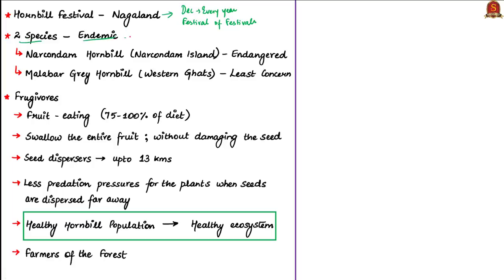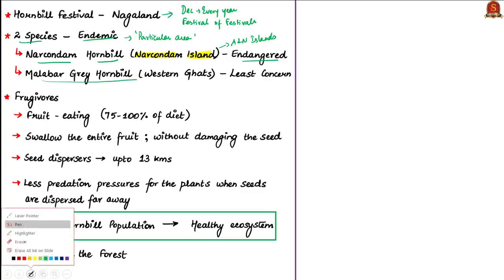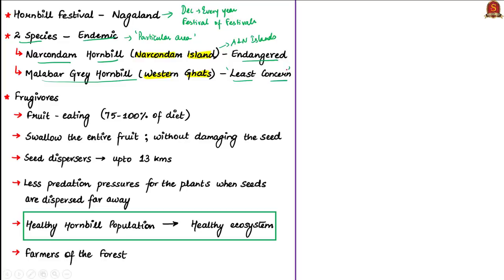There are two hornbill species endemic to India. The word endemic means a species belonging to that particular area only. The first endemic species is the Narcondum hornbill, endemic to Narcondum Island, which is part of the Andaman and Nicobar Islands group. The Narcondum hornbill is classified as endangered under the IUCN Red List. The second endemic species is the Malabar Gray Hornbill, endemic to the Western Ghats in India, classified as least concerned under the IUCN Red List because their population is higher there.